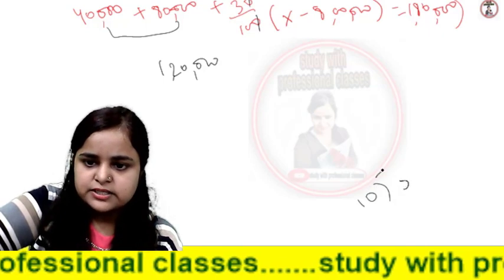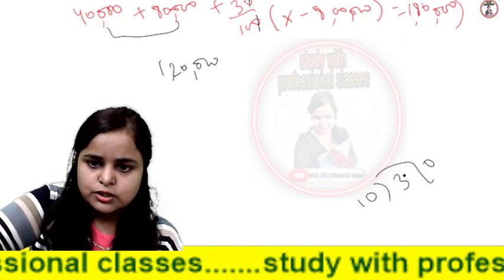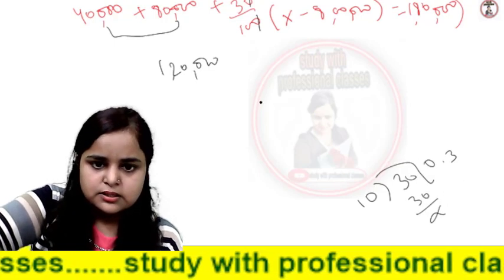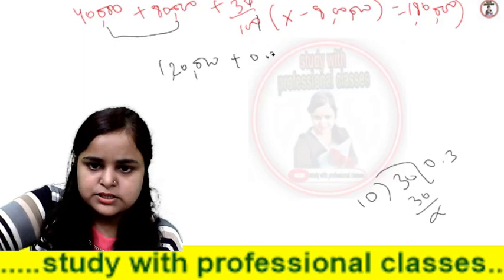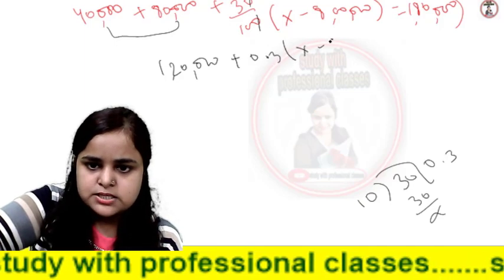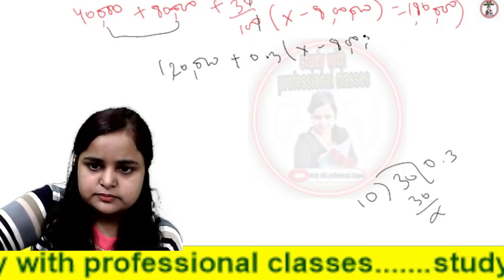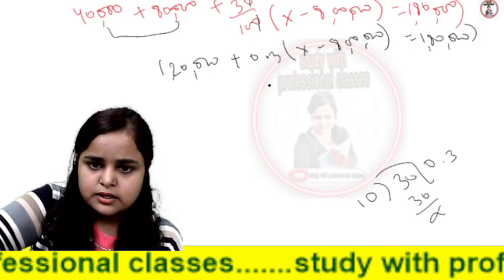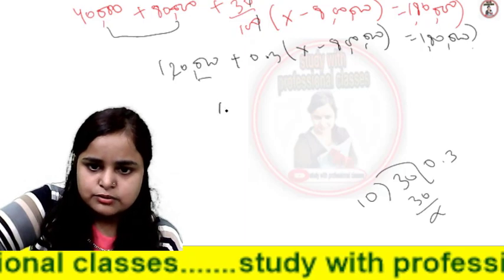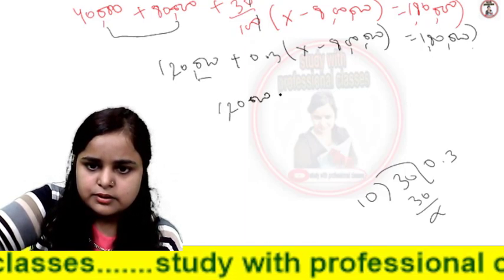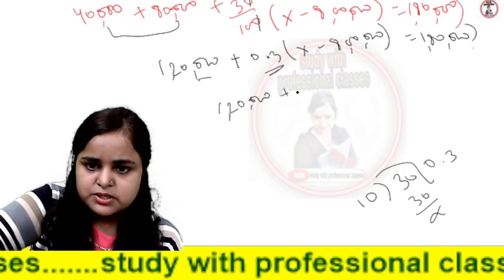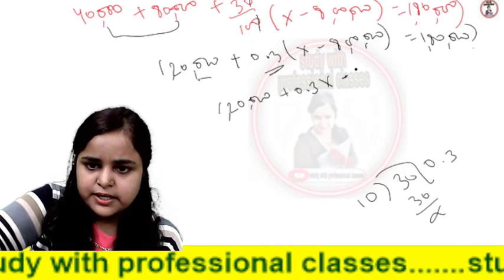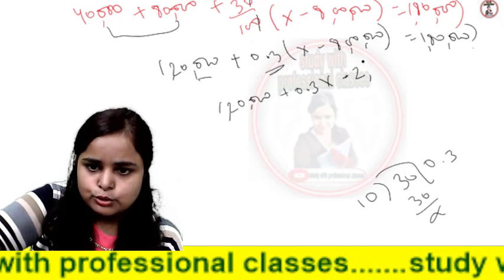If we divide by 10, we add 10. Then it will be 0.30. So we have 0.3 and then x minus 8,00,000. This is 1,80,000, and if we cross this, the difference will be 1,20,000. Then it will be 0.3x, and this will be 40,000 plus 80,000 which is 2,40,000.